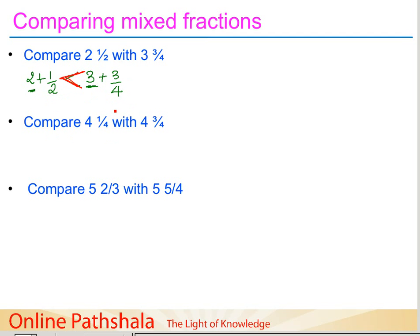Now let's take another example. In this case the whole is kept the same — we have four whole parts and then one fourth of something, and four whole parts and three fourths of something.